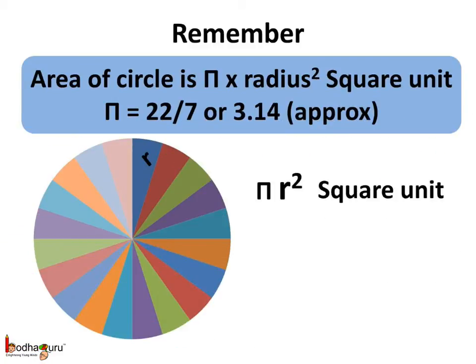So, remember children, area of any circle is π multiplied by radius square.